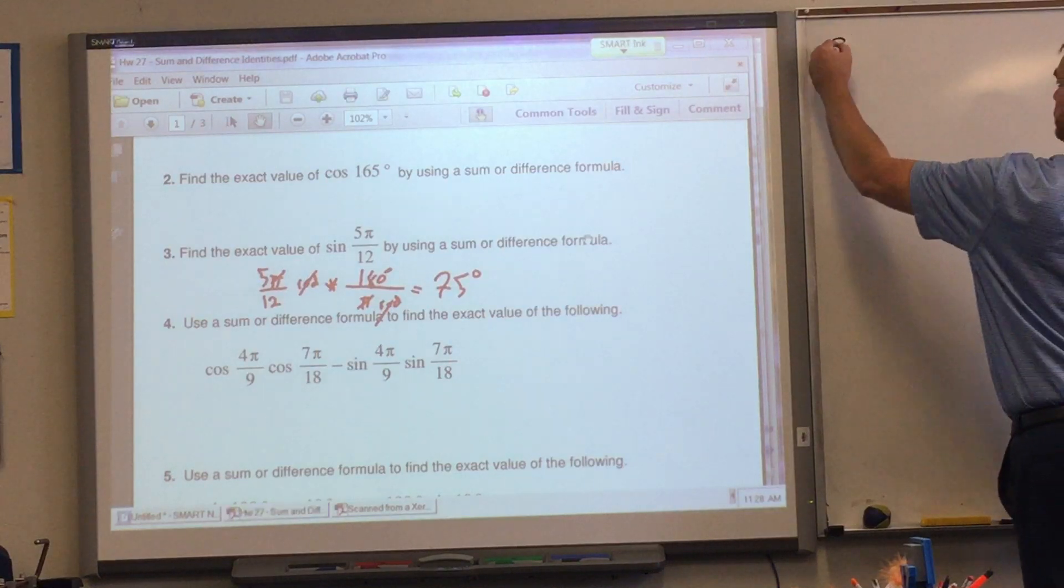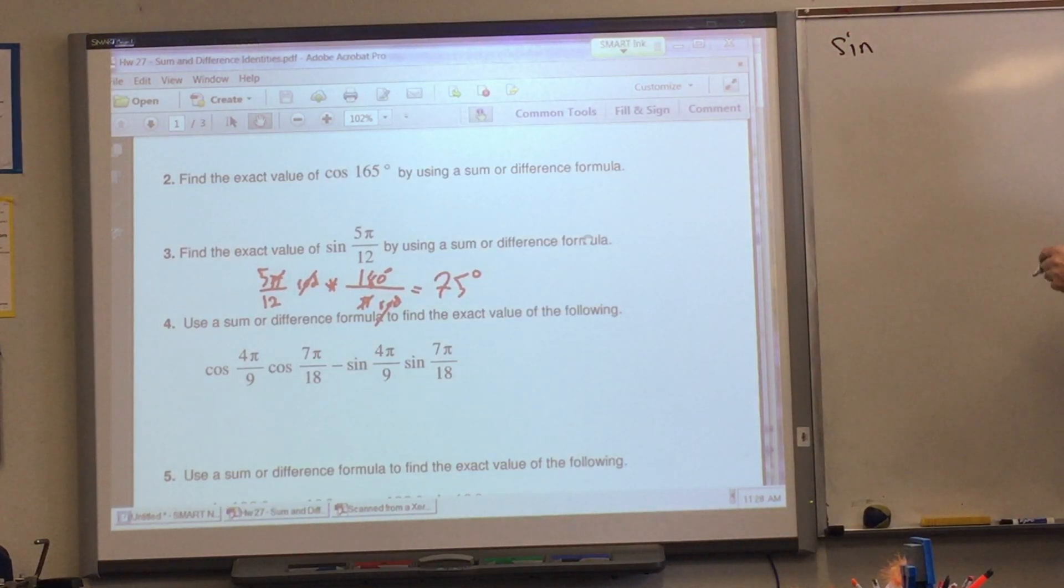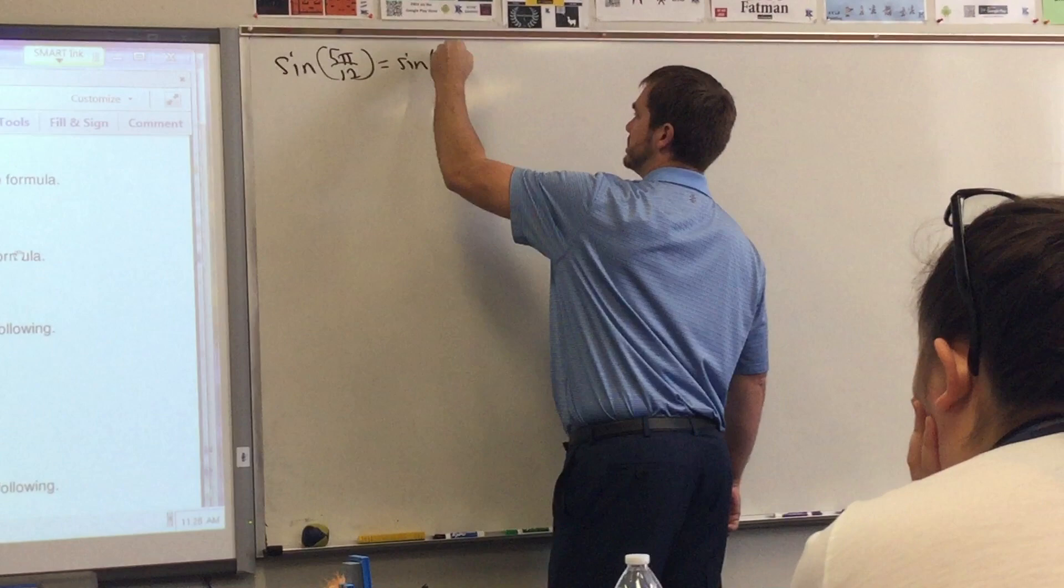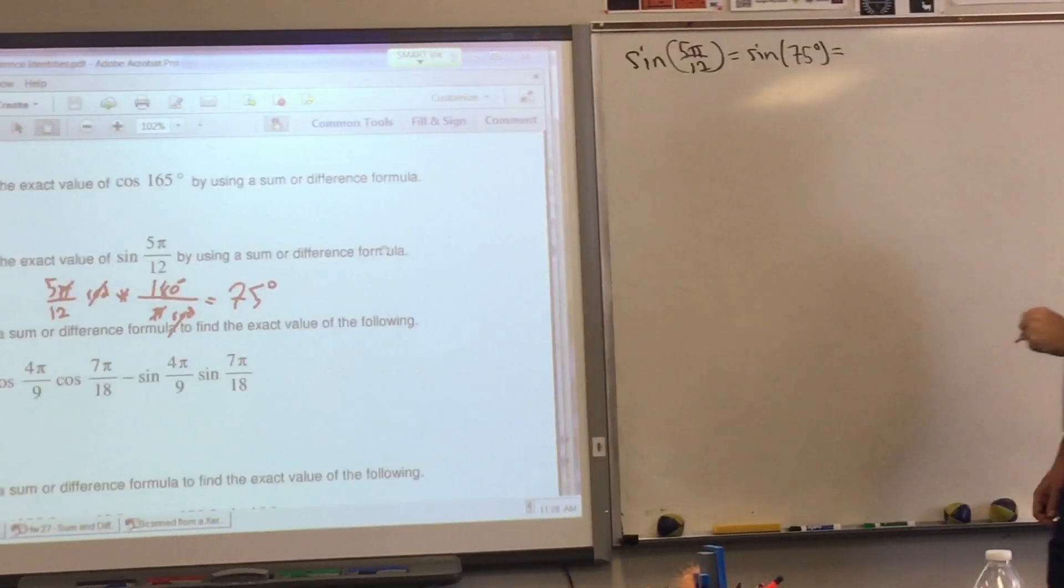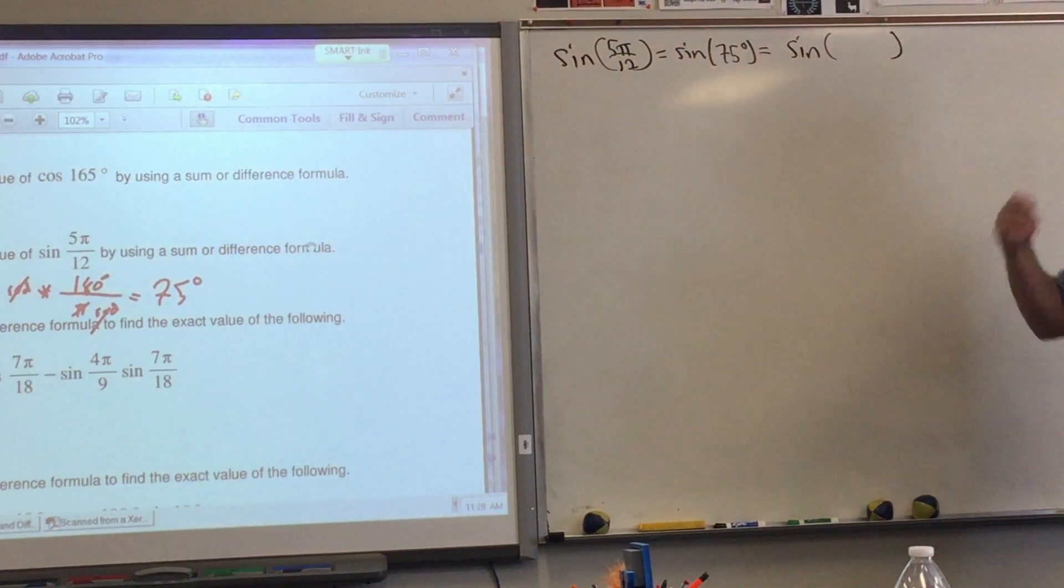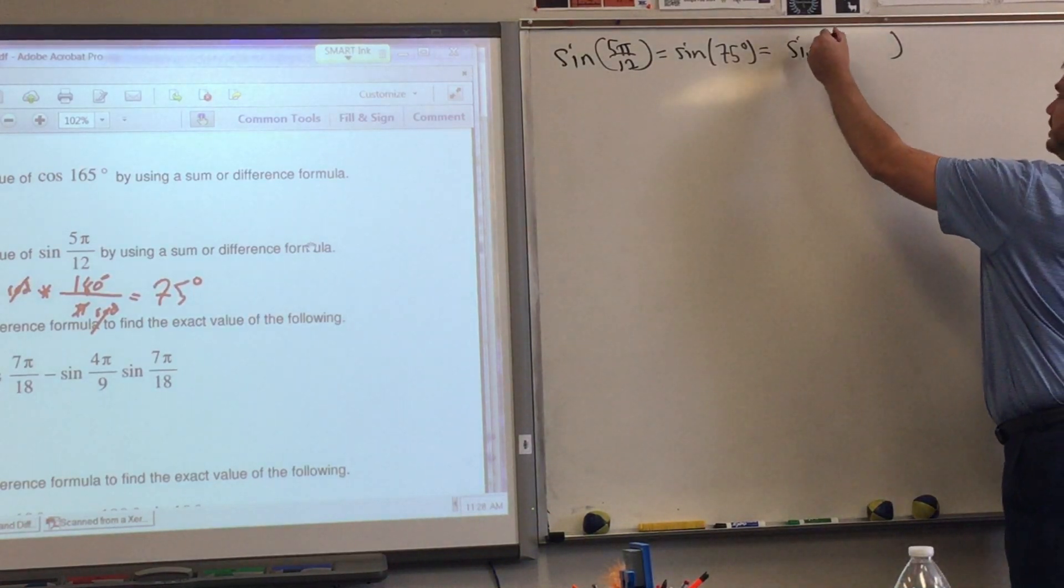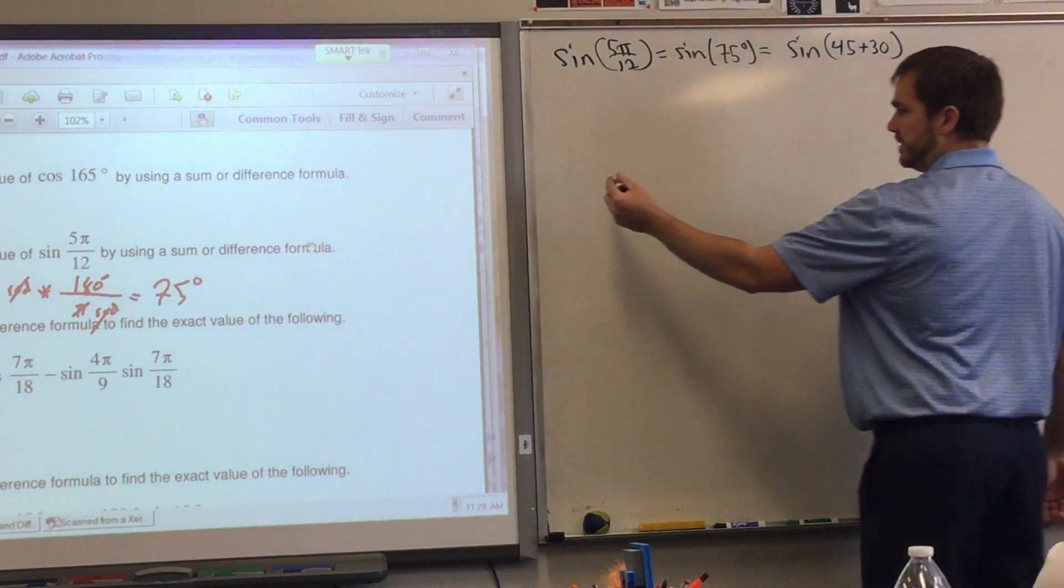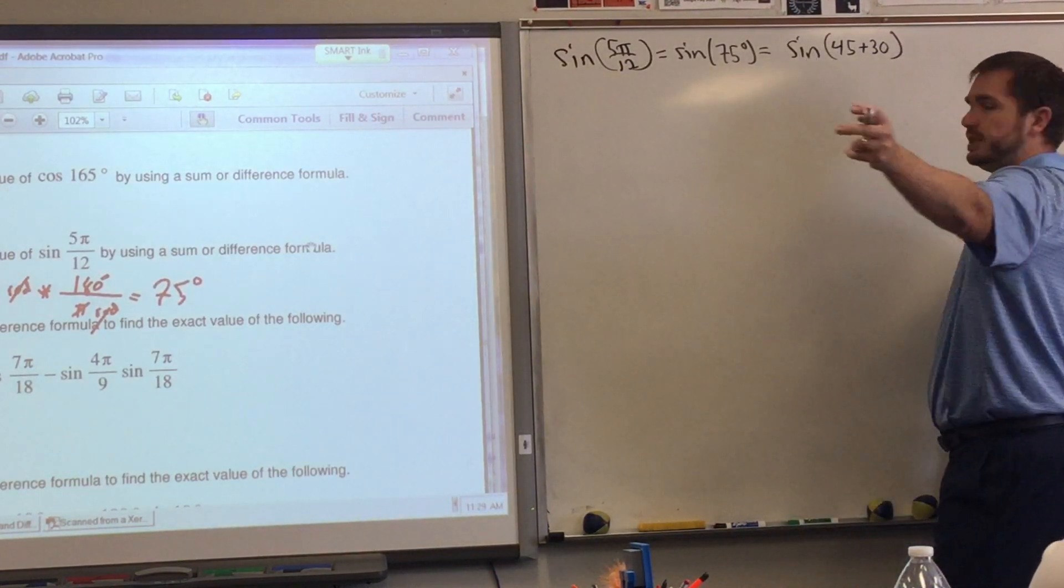So I'll write the problem over here. You probably will need to write some of these on a separate sheet of paper. So sin of 5π over 12 is the same thing as saying the sine of 75 degrees. Can we write 75 as a sum or a difference of two angles that are on your unit circle? Can I write that as plus or minus something? What do you got, Nick? 45 and 30. 45 and 30.